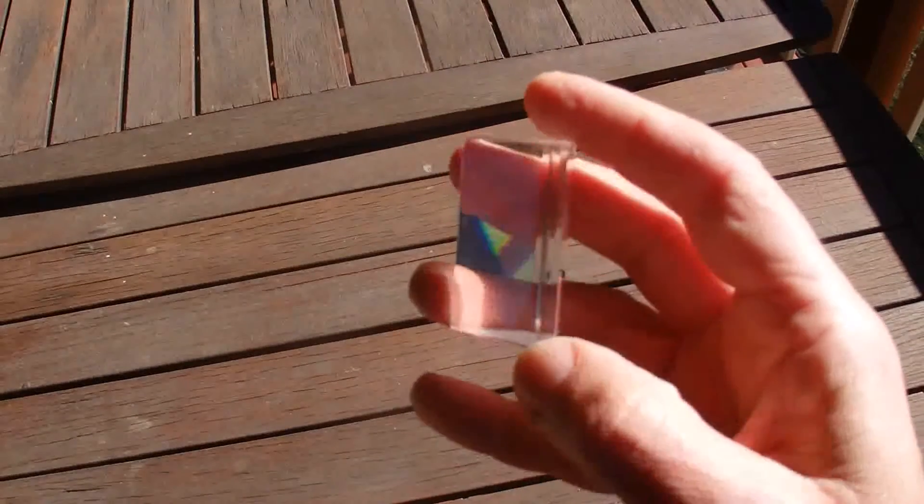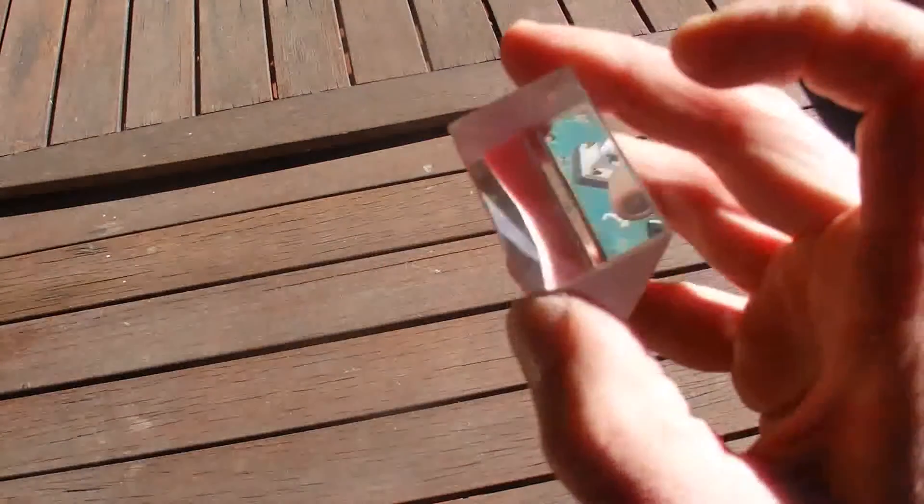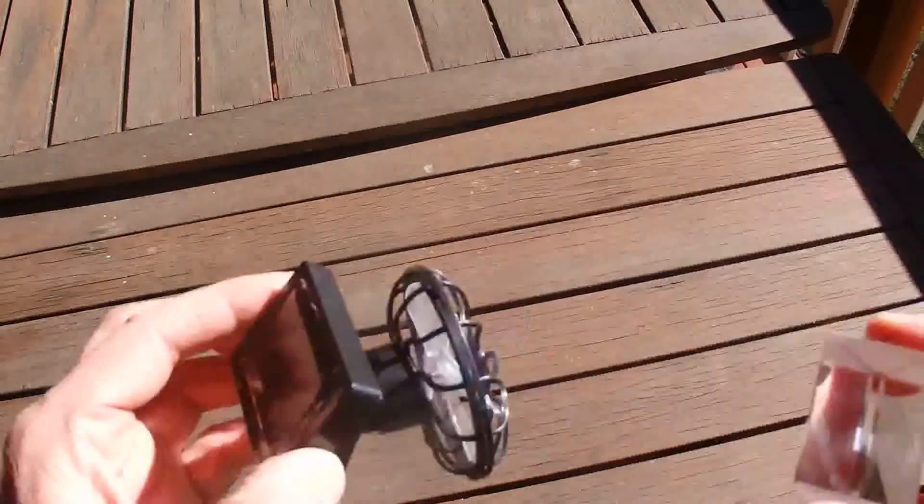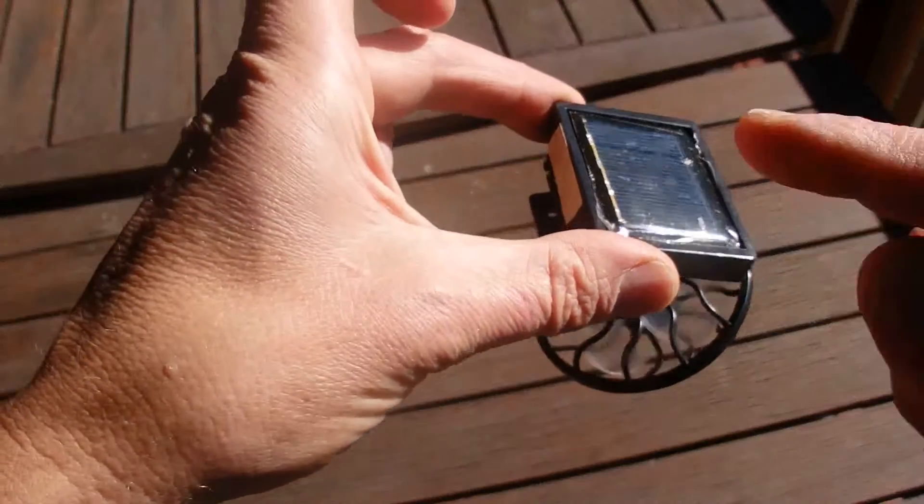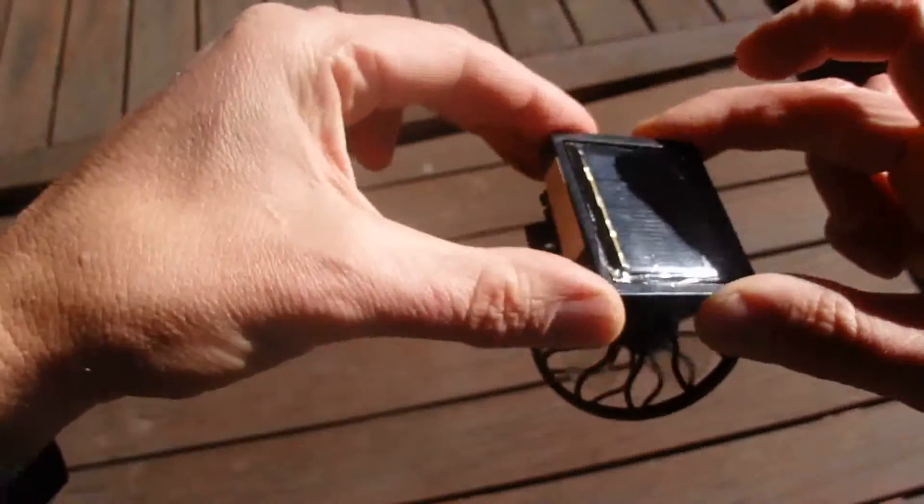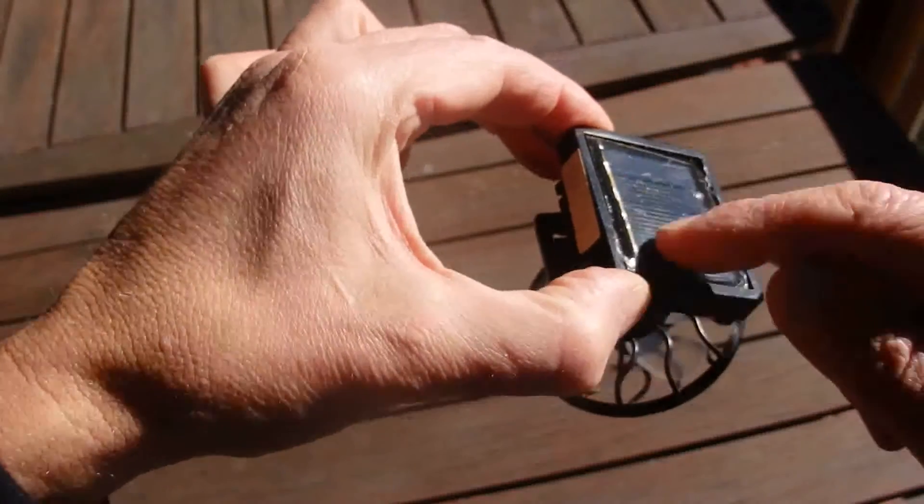Hi there, today I'm going to demonstrate that a prism bends light and I'm going to do this with a solar powered fan. You can see there with the fan that there's the panel, and with that panel in the sun the fan spins.